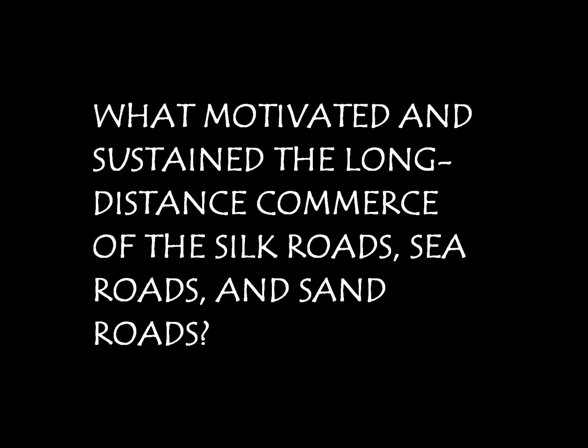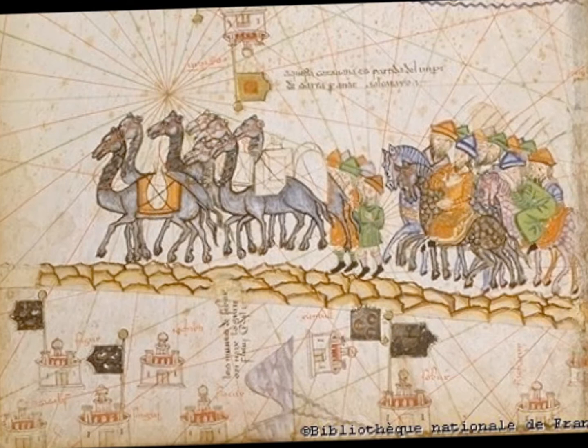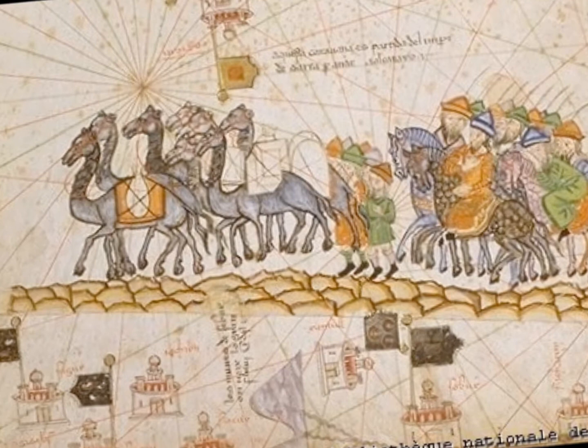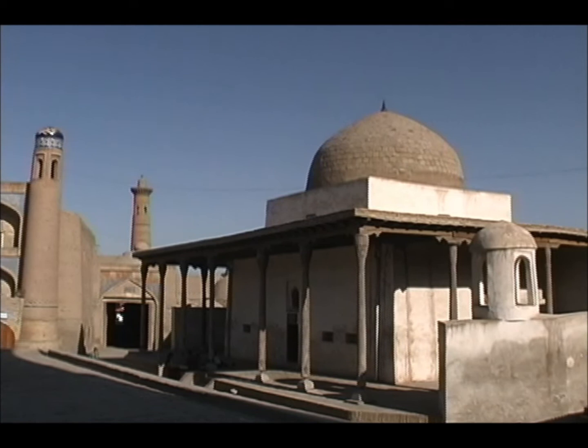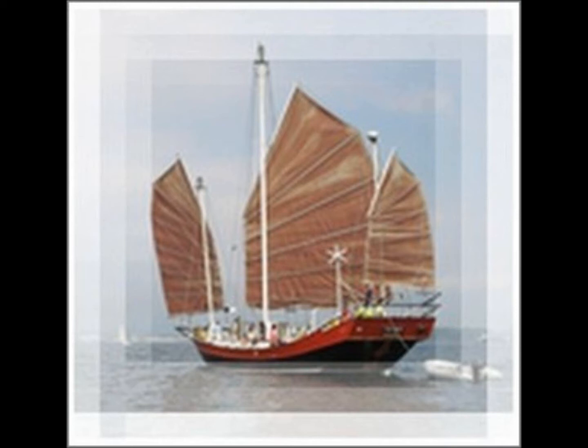What motivated and sustained the long-distance commerce of the Silk Roads, Sea Roads, and the Sand Road? The desire of elites for hard-to-find luxury items from distant parts of Eurasia, as well as the accumulation of wealth especially among merchants who participated in the trade, motivated long-distance commerce. Sustaining the commerce were the support of empires and smaller states that benefited directly from the trade, the spread of religious traditions including Islam and Buddhism, the set of shared beliefs that tied merchants and sometimes whole societies together over wide regions, and the development of technologies like larger ships and magnetic compasses.